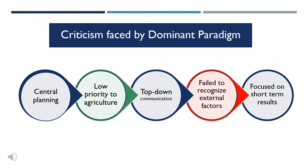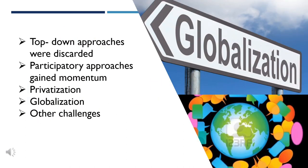The dominant paradigm failed to deliver what was expected. It was criticized for central planning, low priority to agriculture given its industry focus, and lack of recognition of external factors in the development process. In the 1980s, the top-down approaches — the hypodermic needle and magic bullet theory approaches — were discarded, and major works were done at the grassroots level as participatory and bottom-up approaches gained momentum.